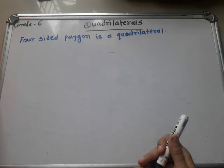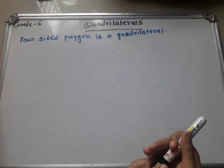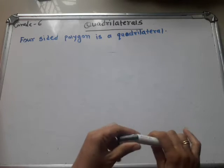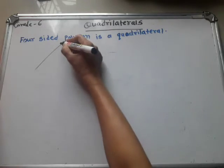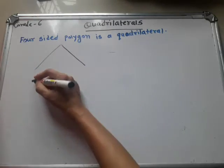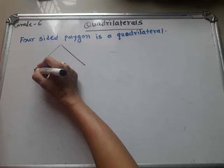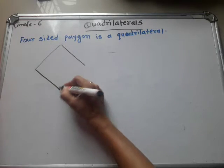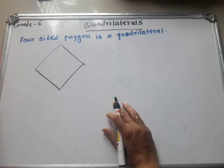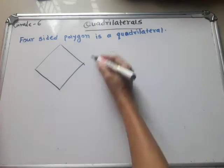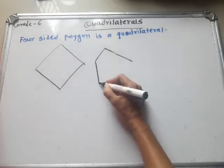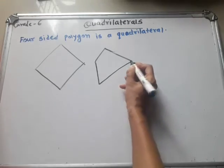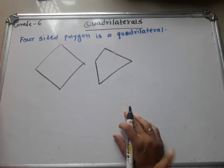So rectangle and square are also called quadrilaterals. We draw here one diagram. This is a four-sided polygon. You can draw any shape, like this also. But it must have four sides only. This is again a quadrilateral.